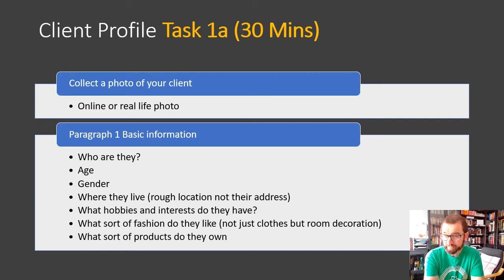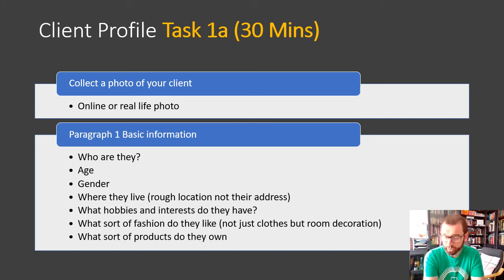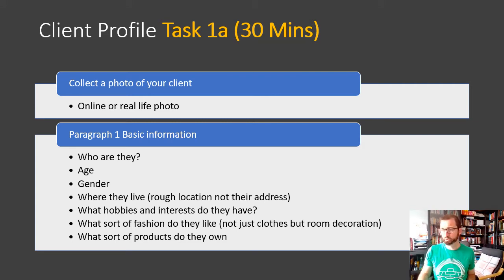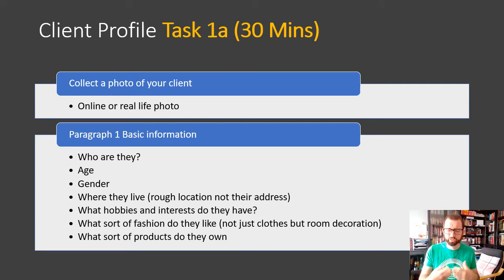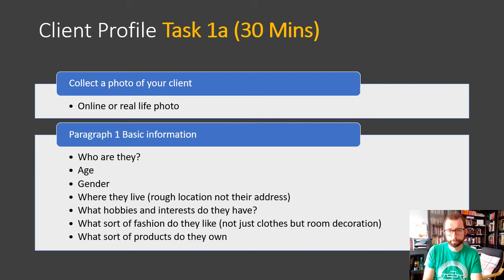Paragraph one covers basic information: who are they, do they have a name, what is their age and gender, where do they live (rough location — not their postcode), what hobbies and interests do they have, what sort of fashion do they like, and what products do they own? For example, do they have an iPhone or an expensive lamp or watch? That gives you an idea of the type of fashion and styles of products you might want to design. This is paragraph one and should take about half an hour.